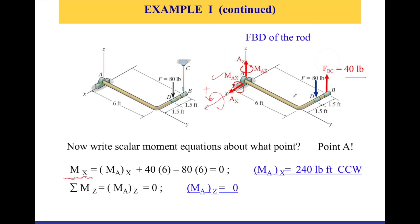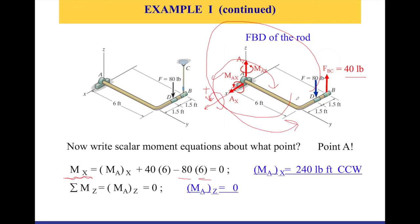The 80-pound force tries to rotate clockwise about the x-axis — negative — with a distance of 6 from the x-axis: −80 × 6. The 40-pound FBC tries to rotate counterclockwise about the x-axis — positive — also at a distance of 6: +40 × 6. Setting ΣMx = 0: Max − 80(6) + 40(6) = 0, which gives Max = 240 lb·ft. So the couple moment about the x-axis is 240 lb·ft, counterclockwise.